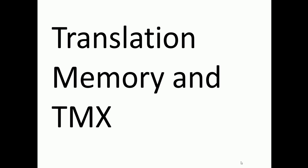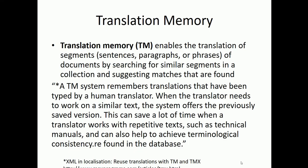Translation memory enables the translation of segments of a document by searching for similar segments in a collection and suggesting matches. A TM system remembers translations typed by a human translator. When the translator needs to work on similar text, the system offers the previously saved version. This can save a lot of time when working with repetitive text such as technical manuals, and can also help achieve terminological consistency.